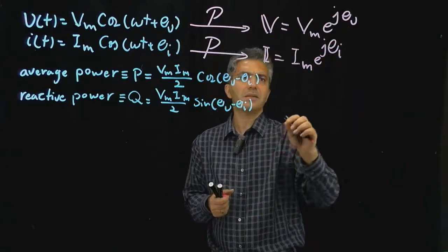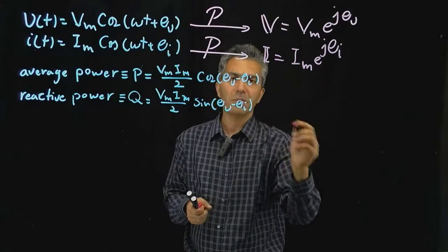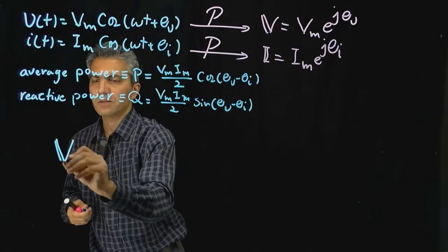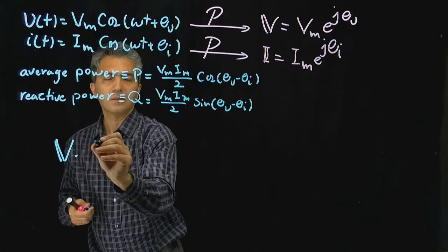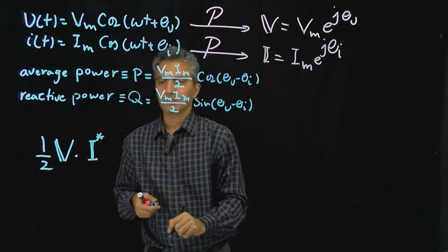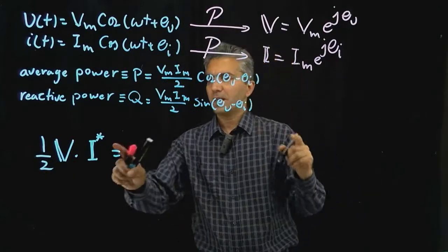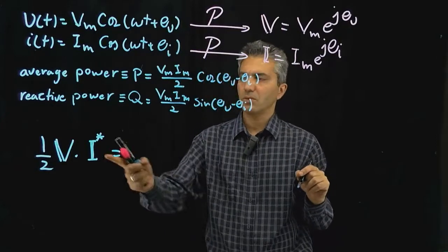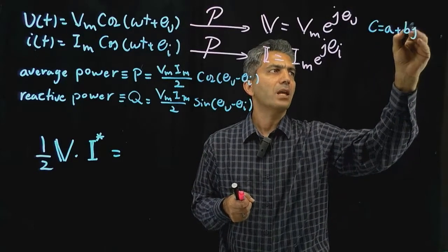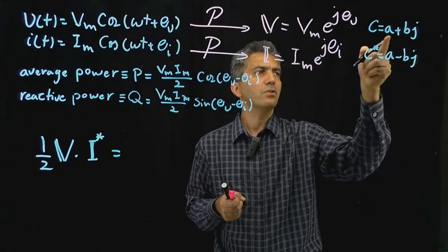I'm going to suggest a specific way of manipulating these two phasors. We take the voltage phasor and multiply it by the conjugate of the current phasor. You'll see the rationale momentarily. But first, recall what it takes to take the conjugate of a complex number: if c is a complex number of the form a + bj, then the conjugate of c is a − bj.